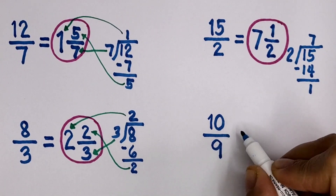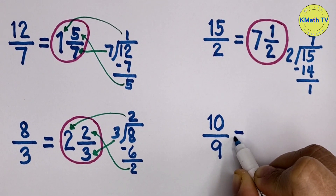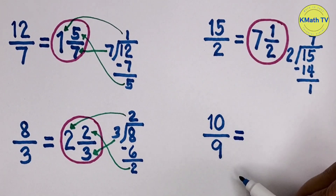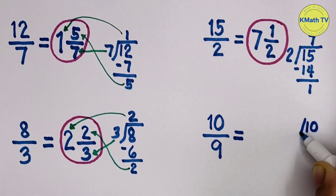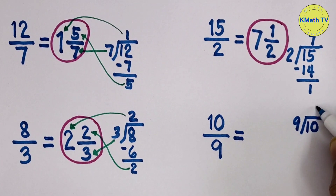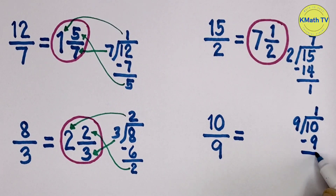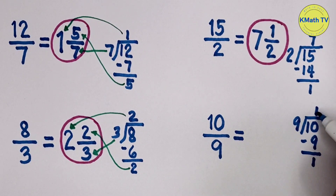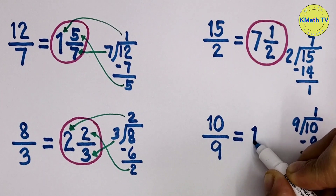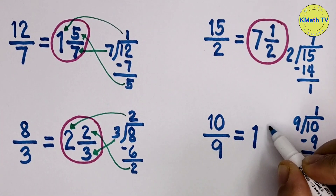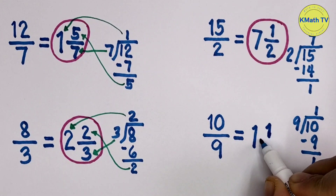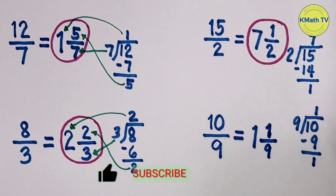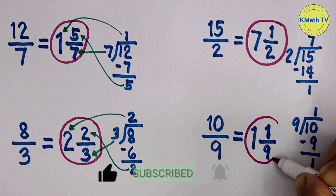Last example — let's write 10 ninths as a mixed fraction. Just divide the numerator 10 by the denominator 9. 10 divided by 9 equals 1. 1 times 9 equals 9. Subtract. 10 minus 9 equals 1. The remainder is 1 and the quotient is 1. The quotient 1 is the whole number, the remainder is the numerator, and the divisor is the denominator. So the improper fraction 10 ninths is 1 and 1 ninth as a mixed fraction.